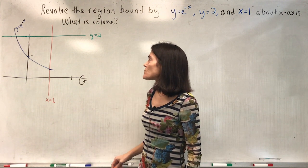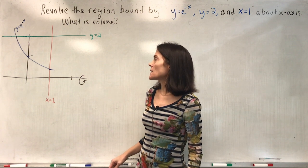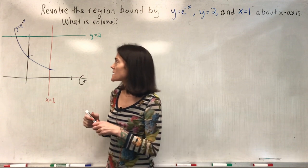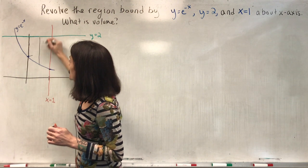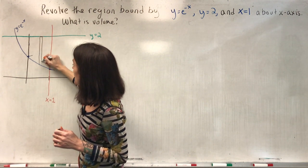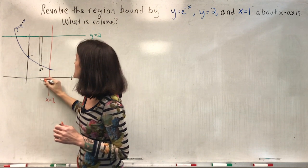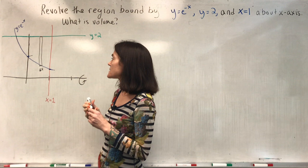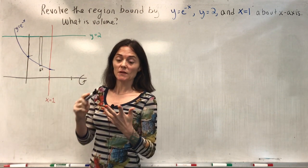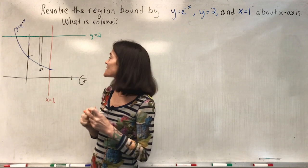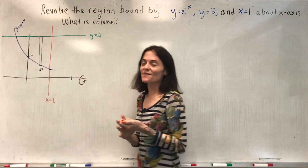With this one we could actually do this a number of ways. We could think about our representative rectangle perpendicular to the axis of revolution, like this. This would be of thickness delta x, and we would be integrating with respect to x. If we are perpendicular to the axis of revolution, it tells us it will either be disks or washers. Here will be washers because you see this gap here. It's definitely not disks.